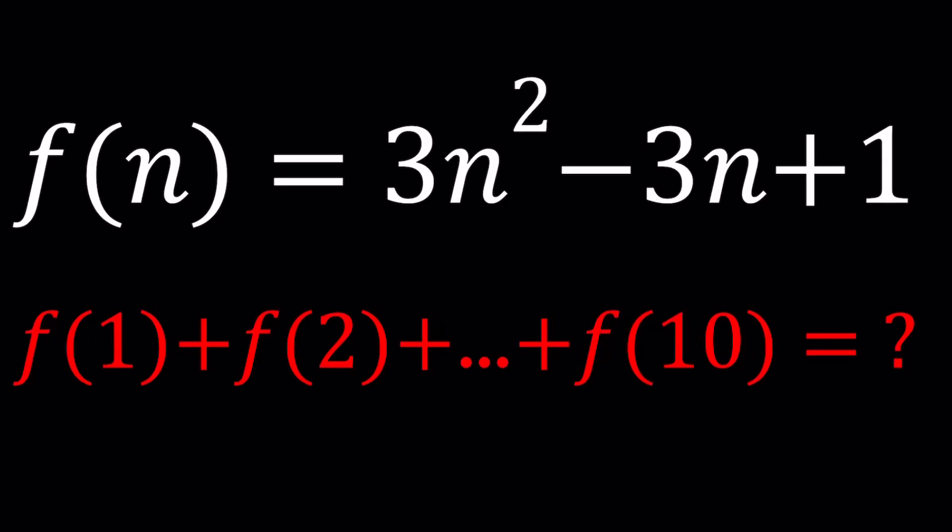Hello everyone. In this video, we're going to be working with a function. We have f of n equals 3n squared minus 3n plus 1, and we're supposed to evaluate f of 1 plus f of 2 plus so on and so forth all the way up to and including f of 10. So we're going to find a sum with 10 terms, and I'll be presenting at least two methods. So let's start with the first one.